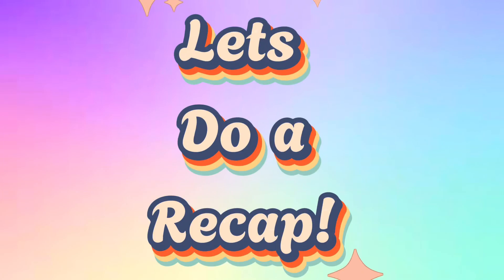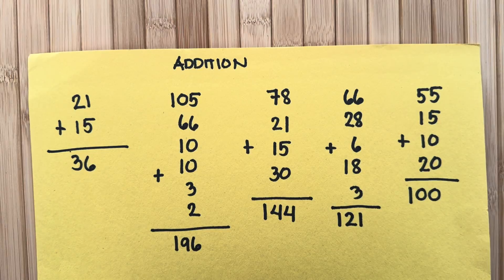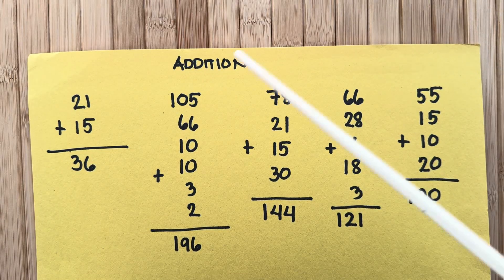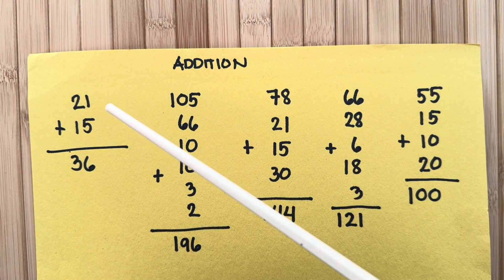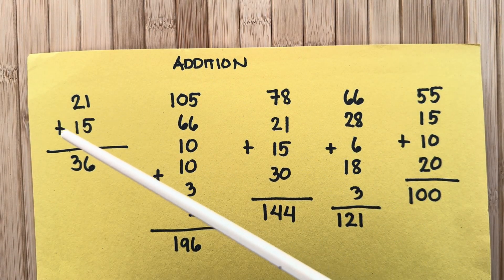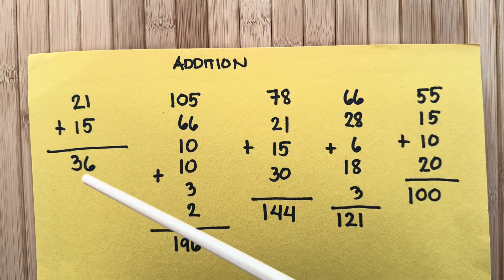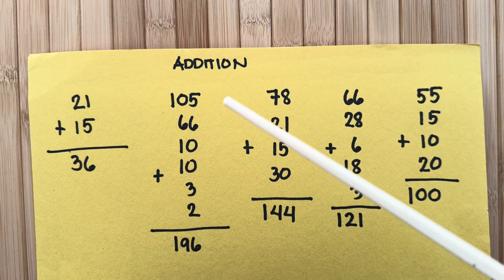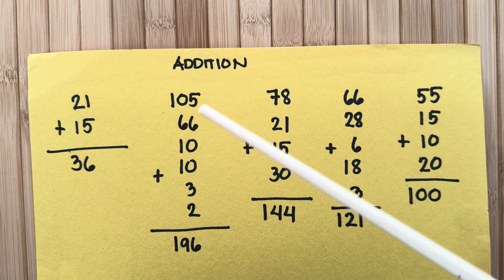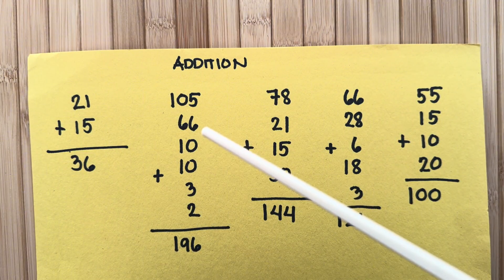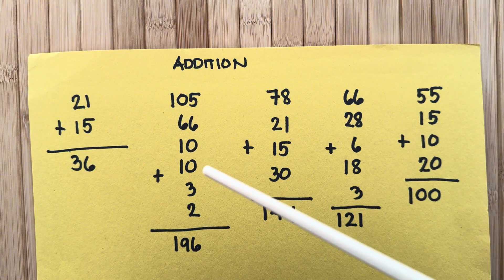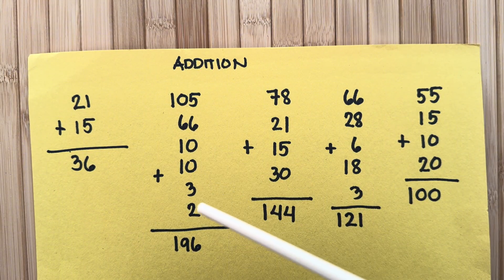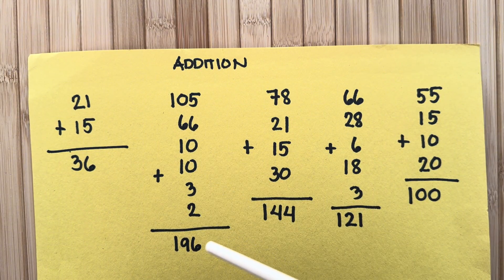Let's do a recap. Let's learn addition. 21 plus 15 is equals to 36. 105 plus 66 plus 10 plus 10 plus 3 plus 2 is equals to 196.